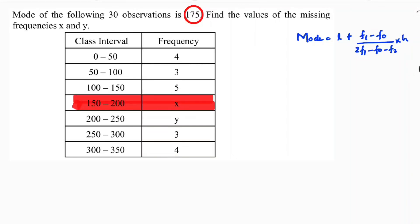The modal class is this one, so now here lower boundary l is 150. And next, f1 is frequency of the modal class, f0 is frequency preceding the modal class, f2 is frequency next to the modal class.